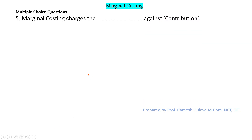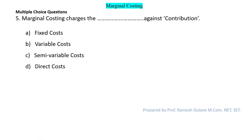The next question says: marginal costing charges the dash against contribution. As discussed, marginal costing charges fixed cost against contribution — meaning we subtract fixed cost from contribution to get profit or loss. So option A — fixed cost — is the right answer.